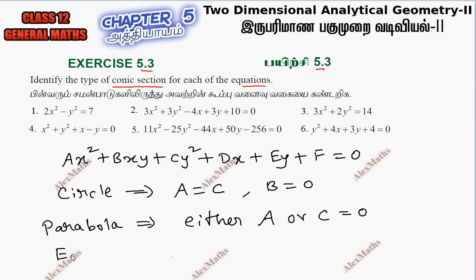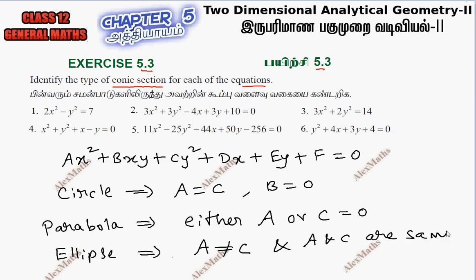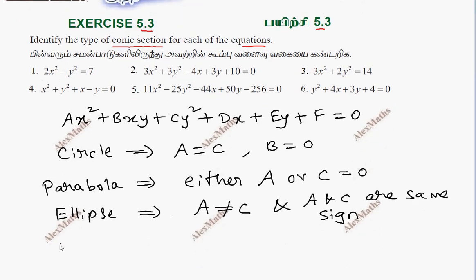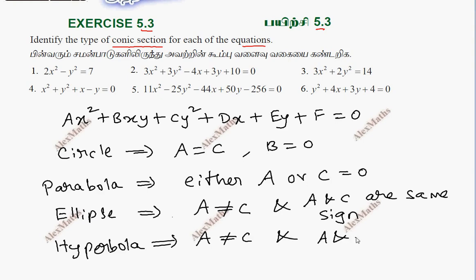This is an ellipse. For an ellipse, A is not equal to C, but A and C are the same sign.